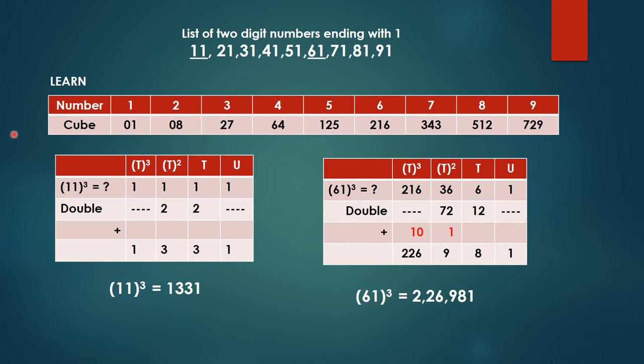If you have watched my previous video you are aware what we are supposed to do. We should know the cube of all the single-digit numbers, that is 1 to 9. Cube of 1 is 1, cube of 2 is 8, cube of 3 is 27, cube of 4 is 64, cube of 5 is 125, cube of 6 is 216, cube of 7 is 343, 8 cube equals 512, 9 cube equals 729. That is all you need to remember.